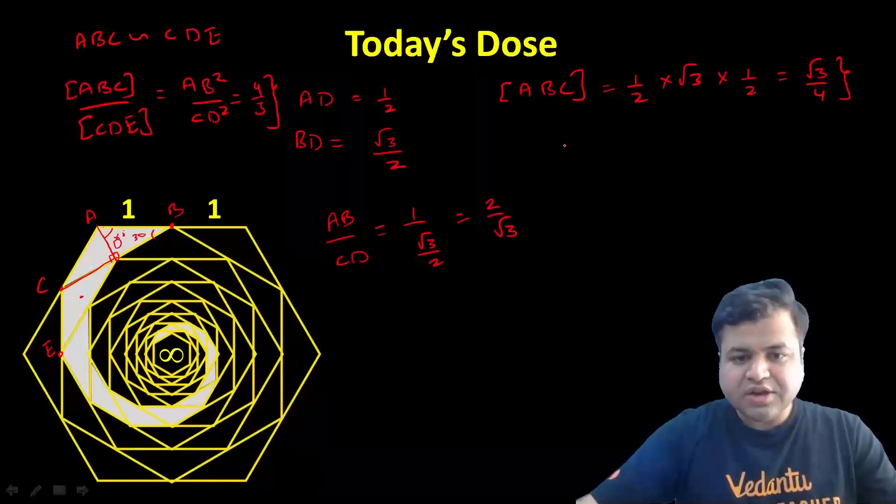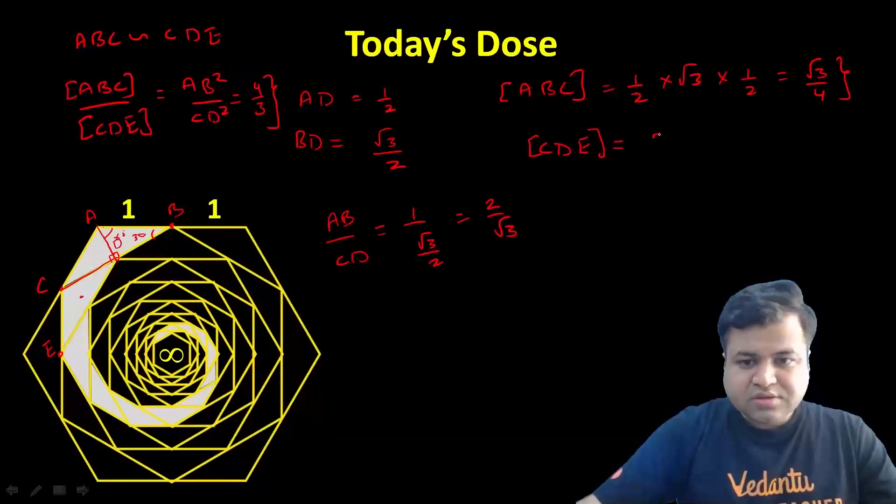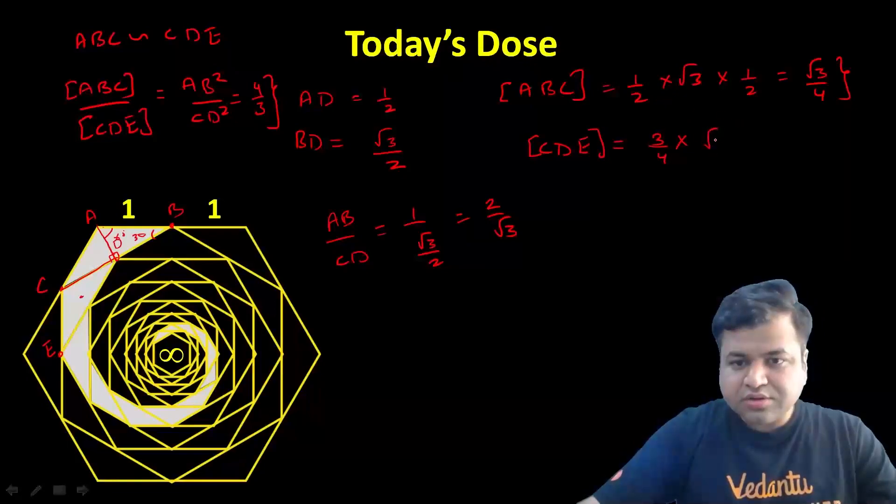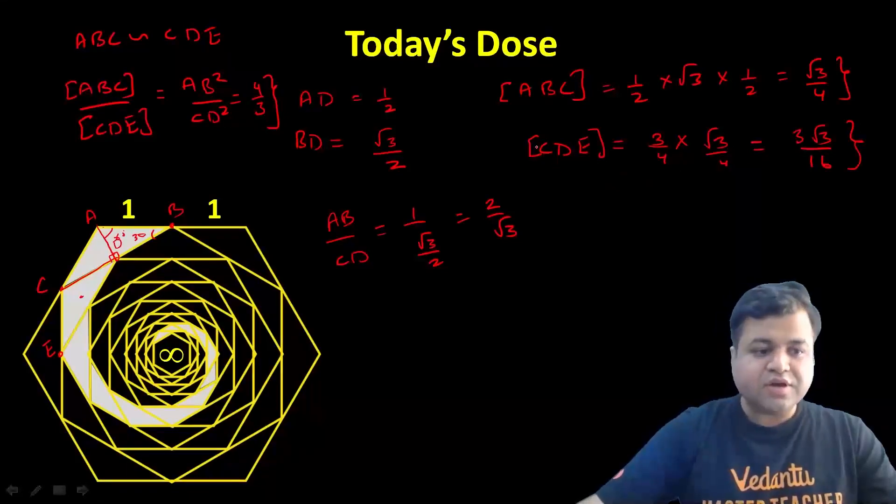The area of C will be one-fourth of this area, which is 3 root 3 by 16. This will be the area of triangle CD. Similarly,